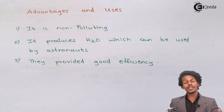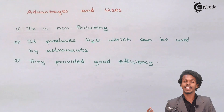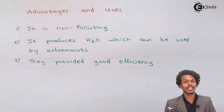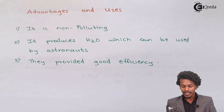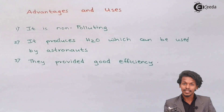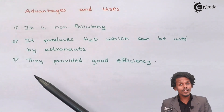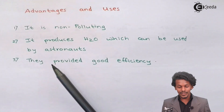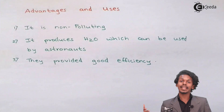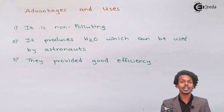Another advantage is that fuel cells are used by astronauts. Astronauts can take H₂ and O₂ in spacecraft, generate electricity, and also produce pure drinking water. This is why fuel cells were used in earlier spacecraft — astronauts could obtain pure water in space using this process.